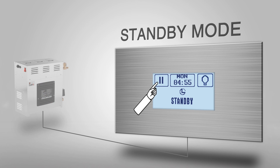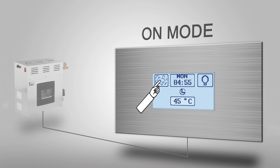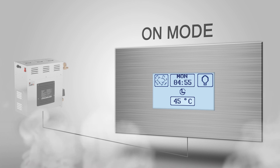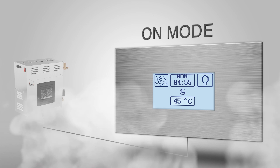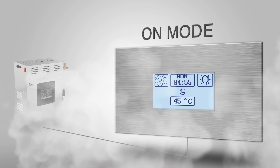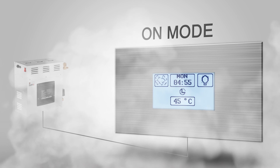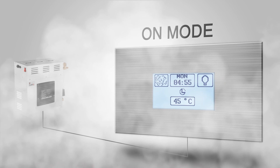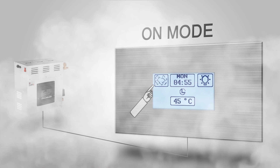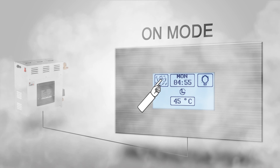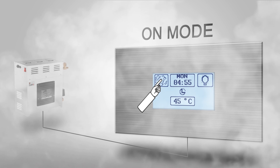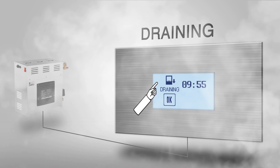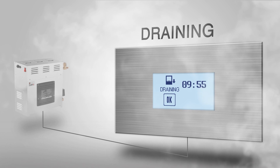In standby mode, the water is kept warm in the tank with minimal energy use and the steam room will accumulate faster in the next session. Now just relax and enjoy the pleasant, mild and cloudy steam inside your steam room. To switch off, long press the steam button to end your steam session.